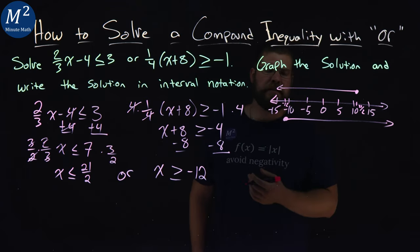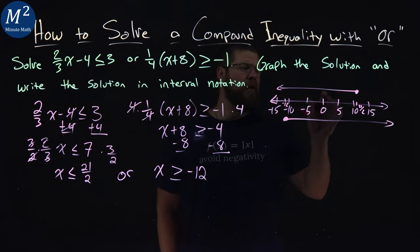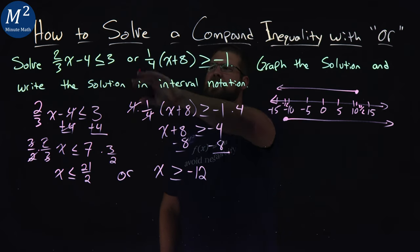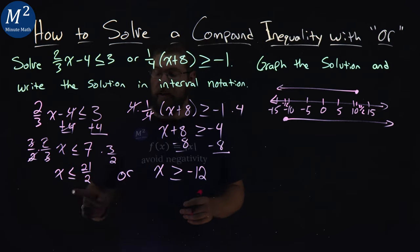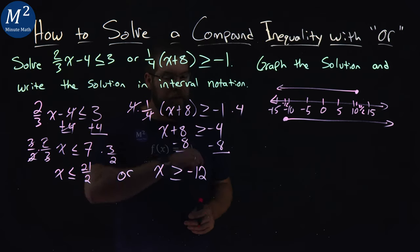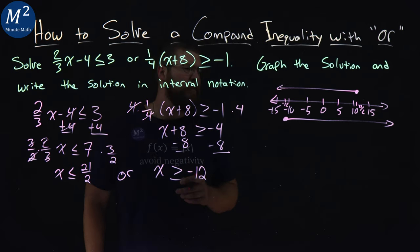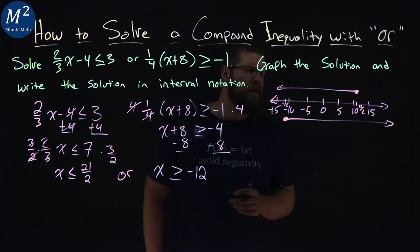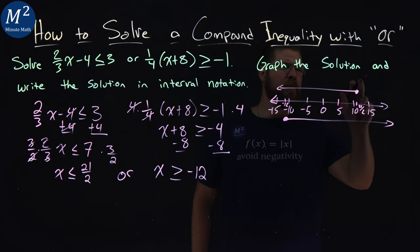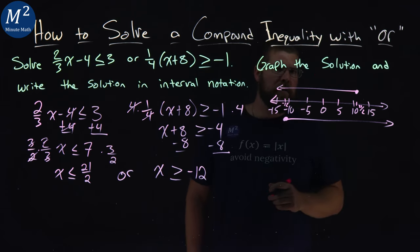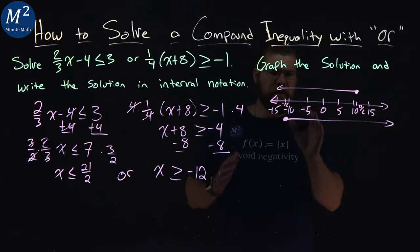Now, this is a little different than our previous example. Notice there's a lot of overlap, but the question says we've got to solve inequalities with or. It says x is less than or equal to 21 over 2, or x is greater than or equal to negative 12. And so, really, every single number is covered here.